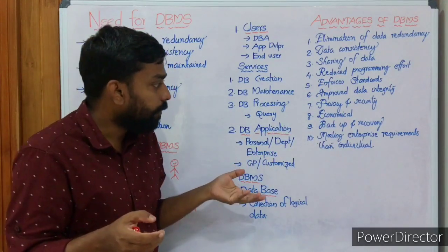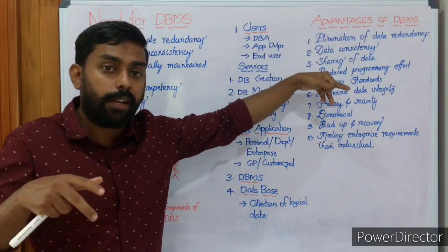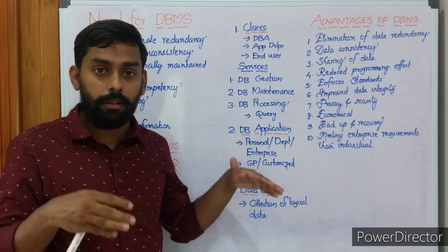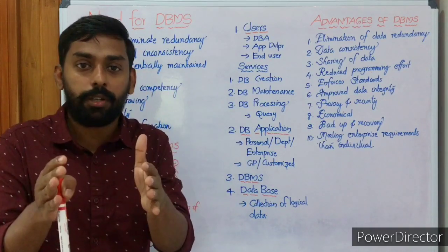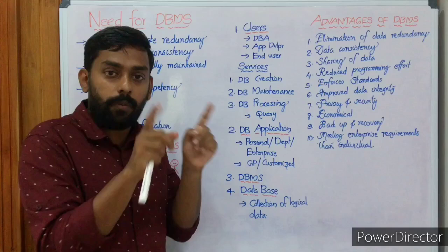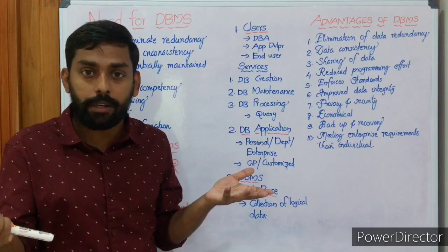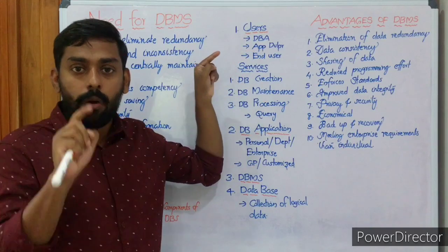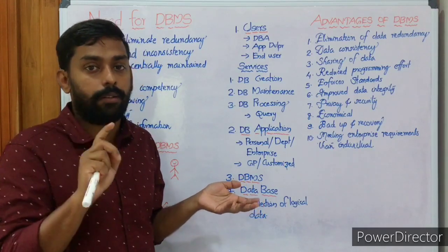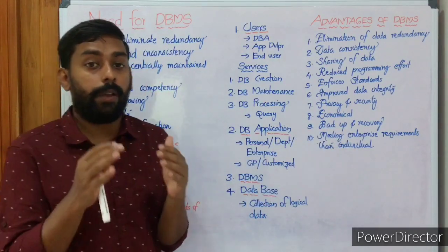Advantage 8 — Economical: Since data redundancy is reduced and data consistency is ensured, DBMS is economical. Data is stored in only one machine. For example, if you have 1 GB of data and 10 locations in a file system, you need 10 GB of storage. With DBMS, data is stored in only one place using just 1 GB — saving 9 GB of storage.